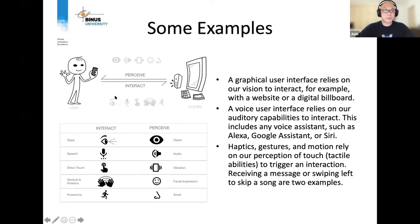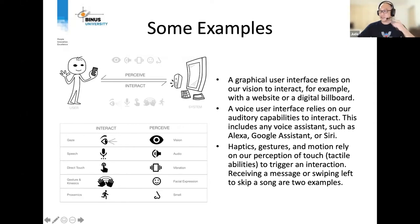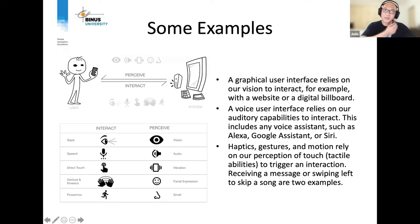We interact with the computer using various modalities: our eyes provide vision, our voice provides audio, direct touch produces vibration, and we also use gestures, facial expressions, and proximics. There's even a new one — smell. We seldom communicate with computers using the sense of smell, and it's quite difficult. We'd need a special sensor on our phones to identify scents. That would be a real challenge to implement.